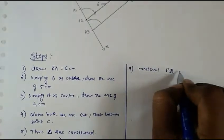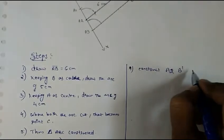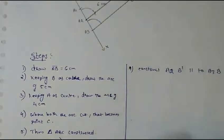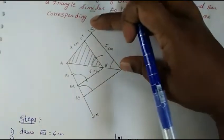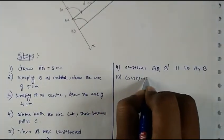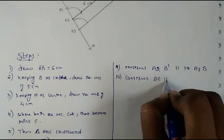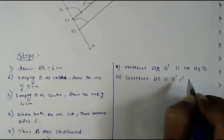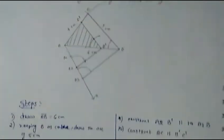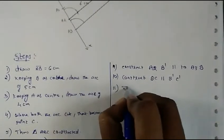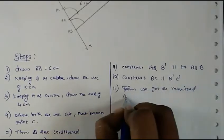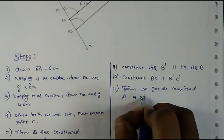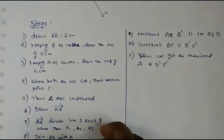Step 10: Construct B dash C dash parallel to BC. After constructing this, we got the required triangle — that is, triangle A, B dash, and C dash. Write the steps in your own words as you are doing your work. It is not compulsory to write exactly this way.